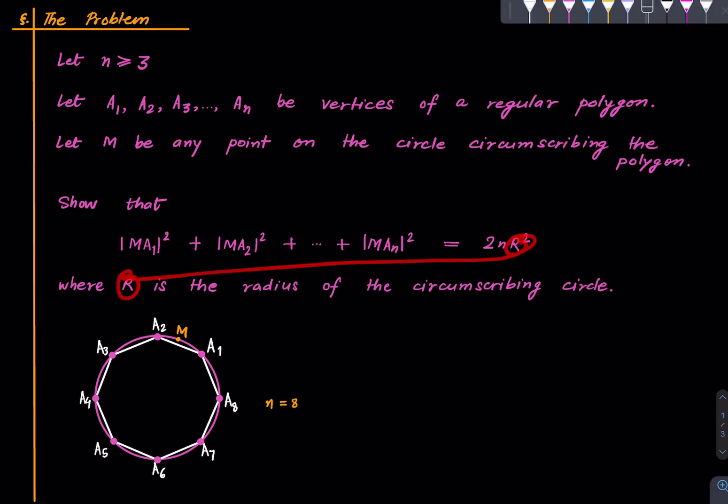Here R is the radius of the circle that is circumscribing the regular polygon. So that's the problem and we will solve this using complex numbers.